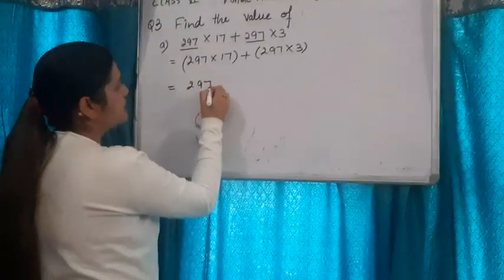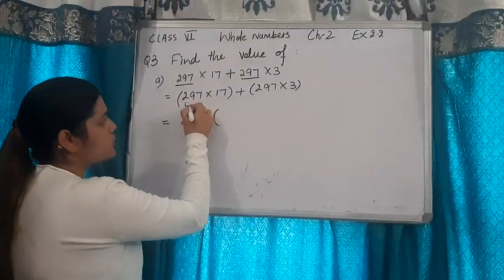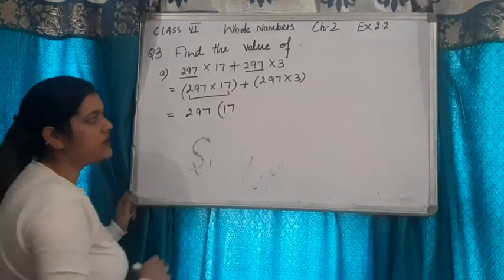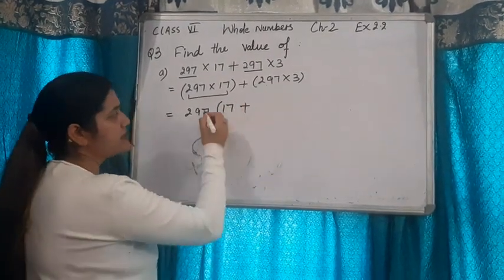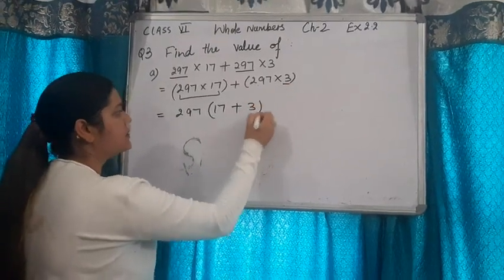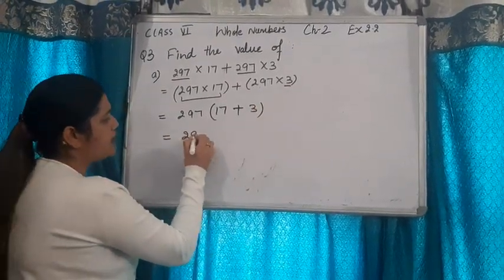297. When we took 297 common from this, what number remains here? 17. Plus, when we took 297 common from here, what number remains? 3.